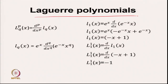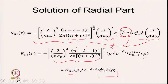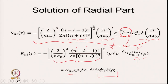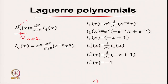This polynomial is called the Laguerre polynomial, written as L with superscript P and subscript Q. The superscript P equals 2L plus 1 and the subscript Q equals N plus L. So P is your 2L plus 1 and Q is your N plus L — keep that in mind.